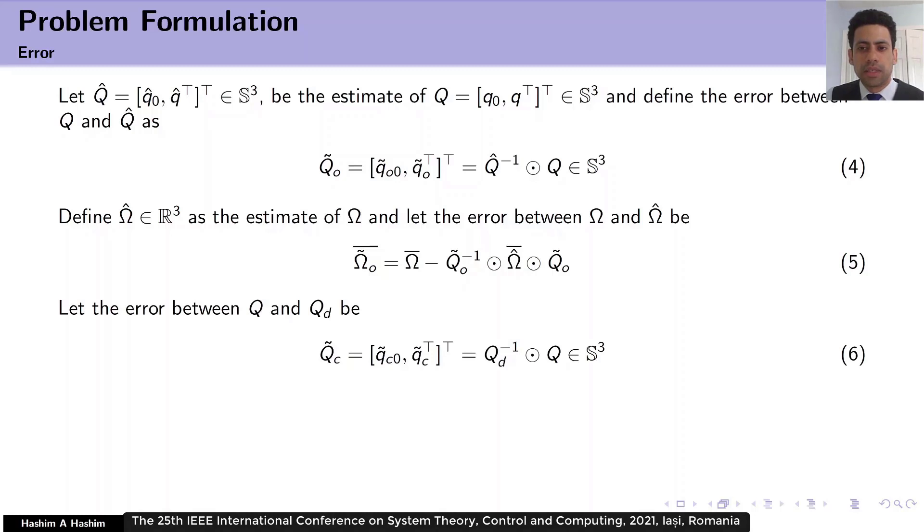Let q_d be the desired unit quaternion and define the error between q_d and q as follows. Let omega_d be the desired angular velocity and define the error between omega_d and omega as shown here.